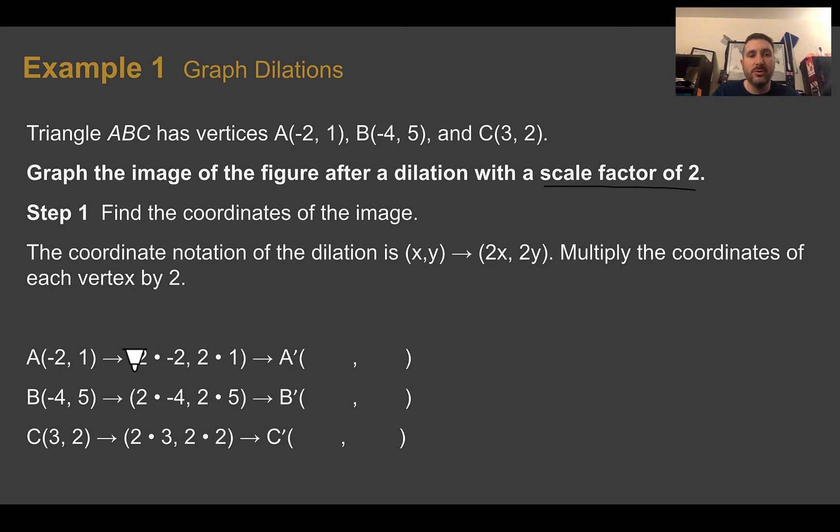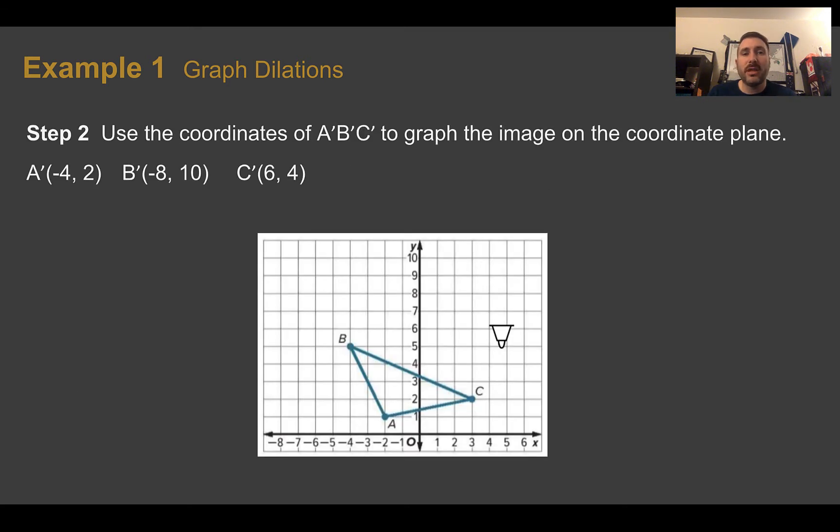So, negative 2, 1 times 2 would give us negative 4, 2. Negative 4, 5 times 2 would give us negative 8, 10. And if we multiply 3 and 2 by 2, we get 6 and 4. Now we have our new coordinates. We can graph those points to dilate our figure that was given originally. So A was at negative 2, 1. Now it's at negative 4, 2. B was at negative 4, 5. Now it's at negative 8, 10. So there's our B prime. And C is now at 6, 4 for C prime. If we connect using a straight edge, we get our dilation of our figure.